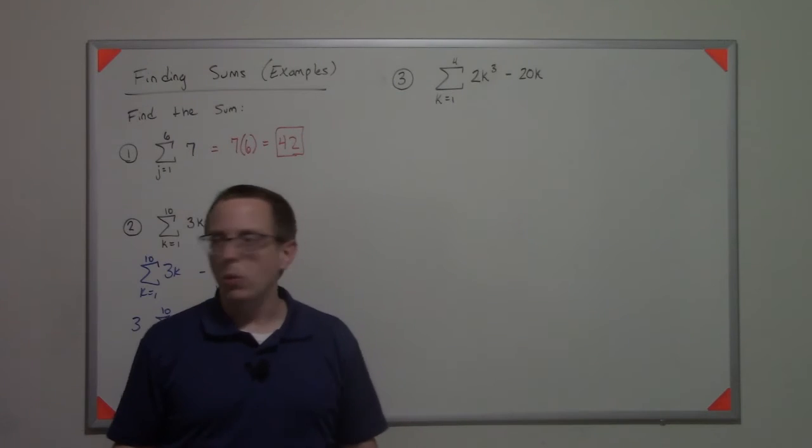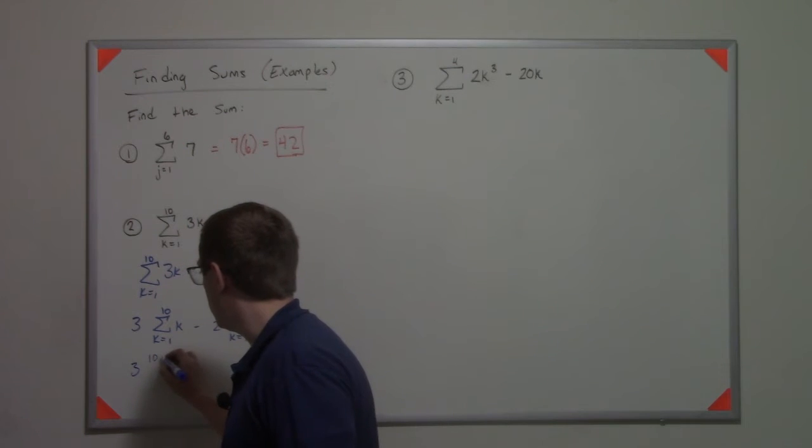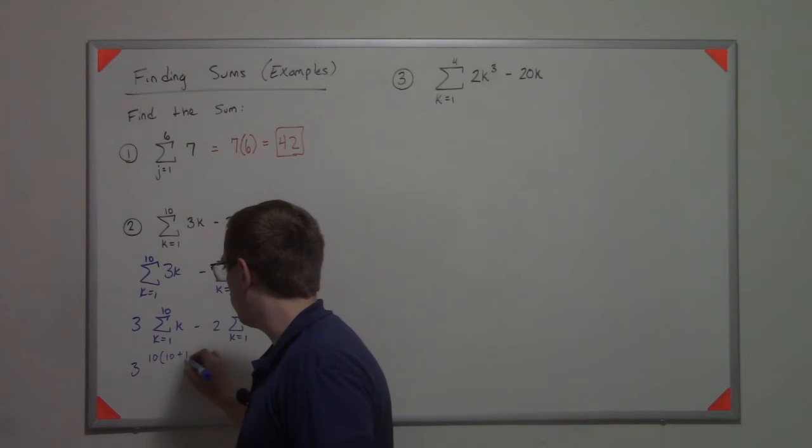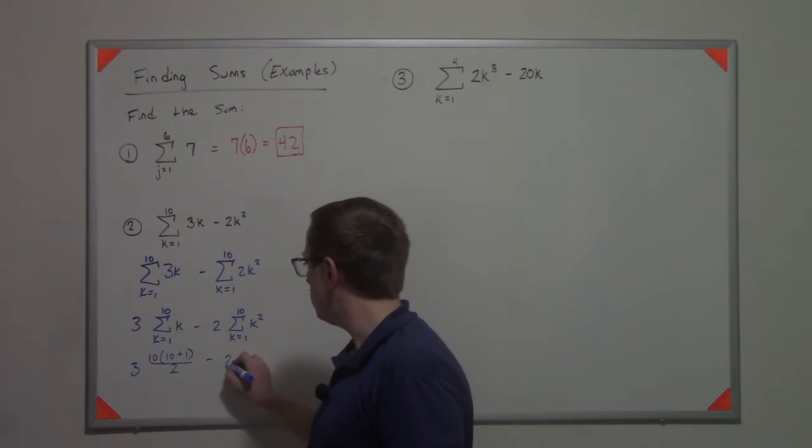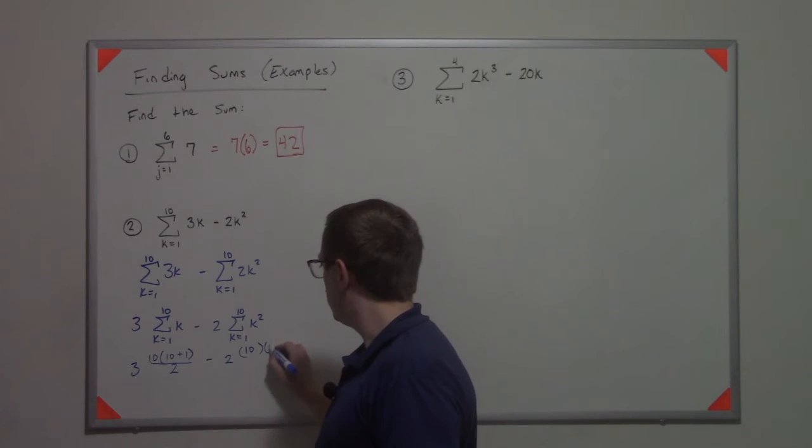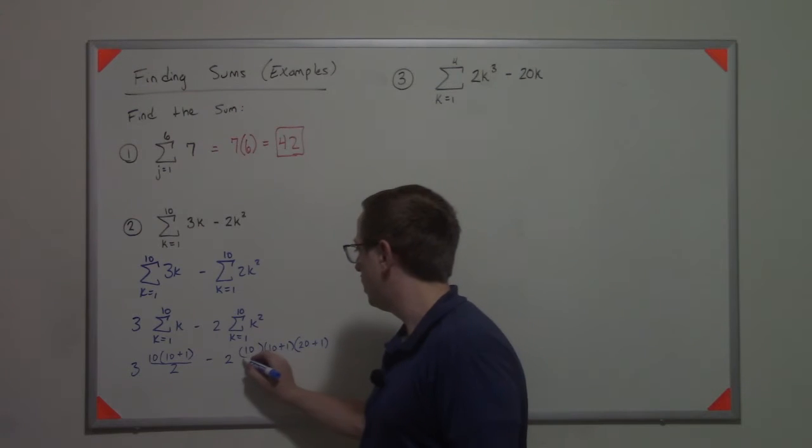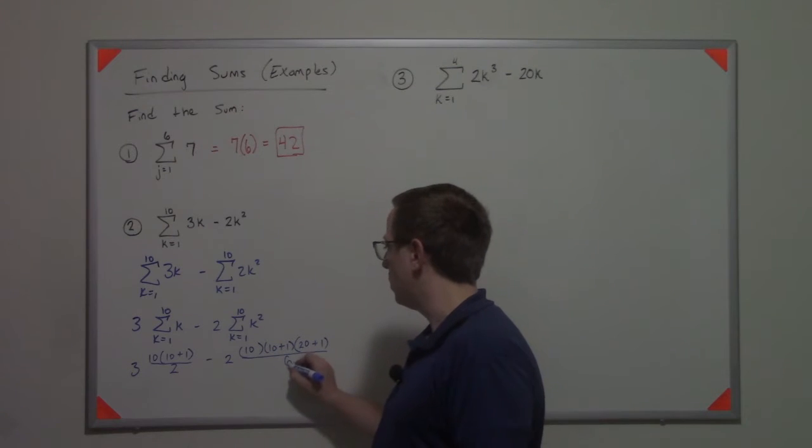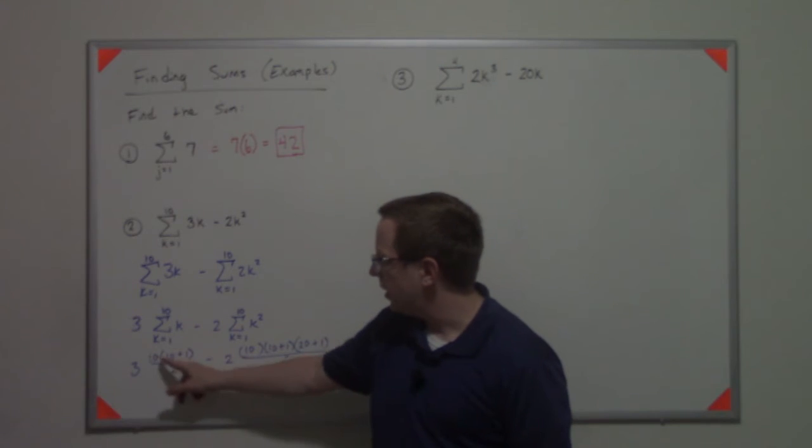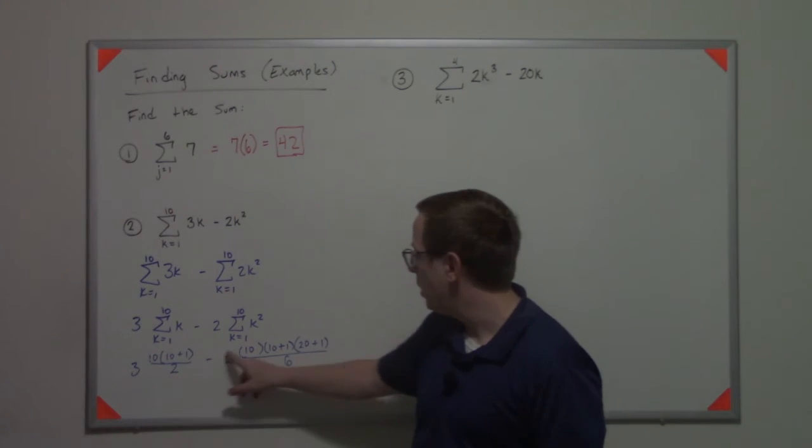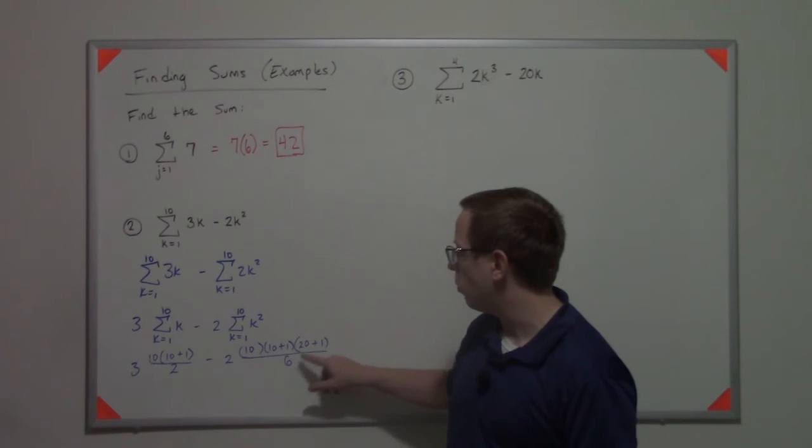At which point we would use the formula here. We would say this is 3 times 10 times 10 plus 1 over 2, minus 2 times 10, 10 plus 1, 20 plus 1, all over 6. Right, that's that n times n plus 1 over 2, n times n plus 1 times 2n plus 1 over 6.